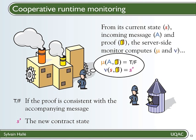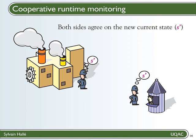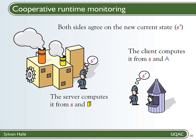The function mu returns true if everything is fine and false otherwise. Then, once the server is convinced that the proof is genuine, it uses it to derive the new state of the protocol, S', from its current state S, using the function nu. The end result is that both sides now agree on the new current state S'. What is different is how each side computed it: the client computed it from S and A, while the server computed it from S and the proof prepared by the client. And this is important in the rest of the presentation.